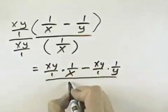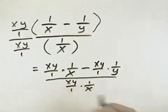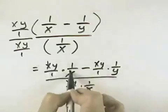And in the denominator, I'll have xy over 1 times 1 over x. I can see the x's cancel here, leaving a y.